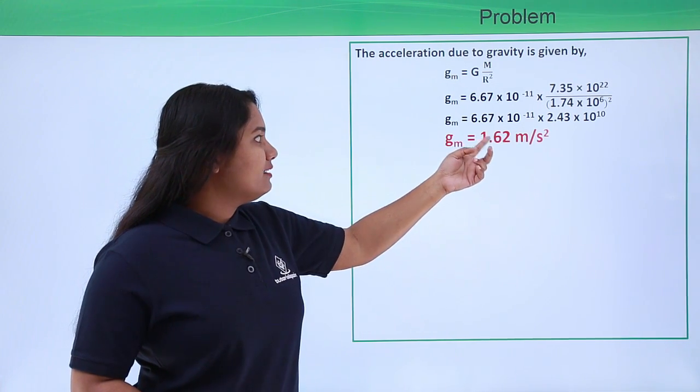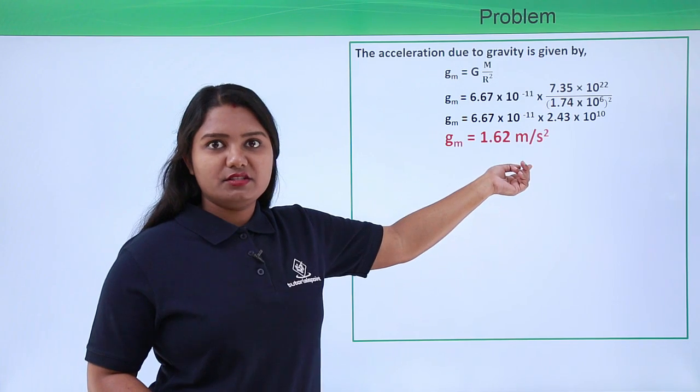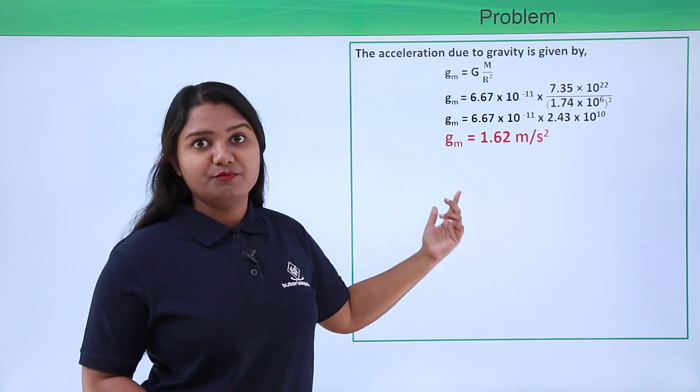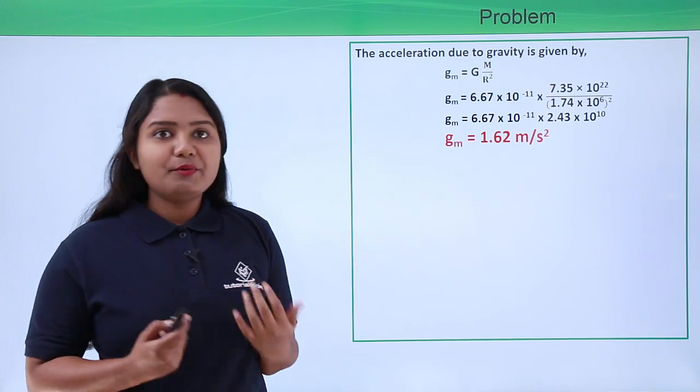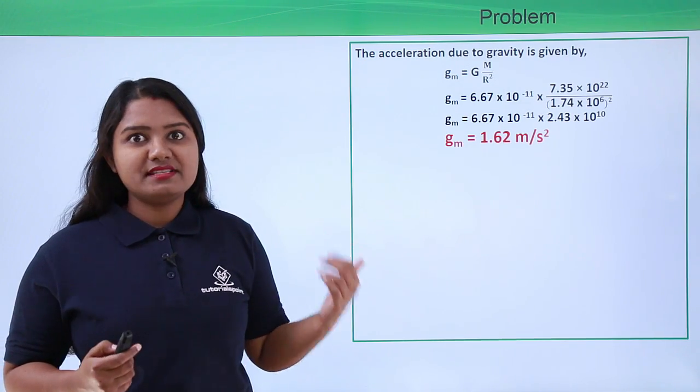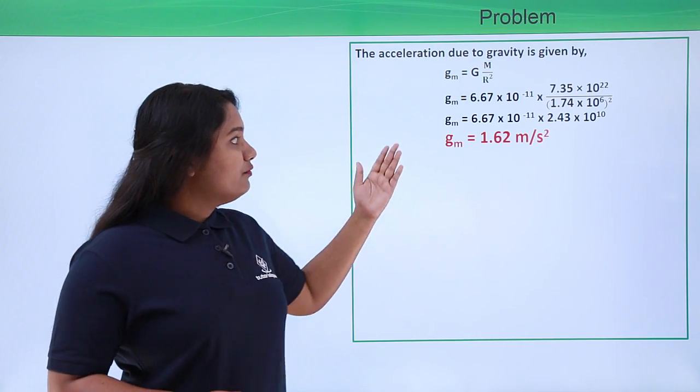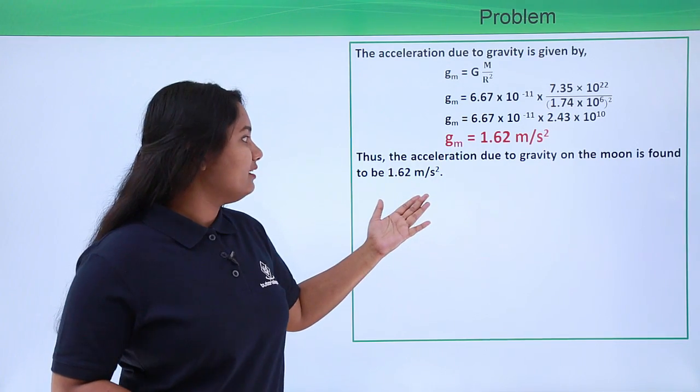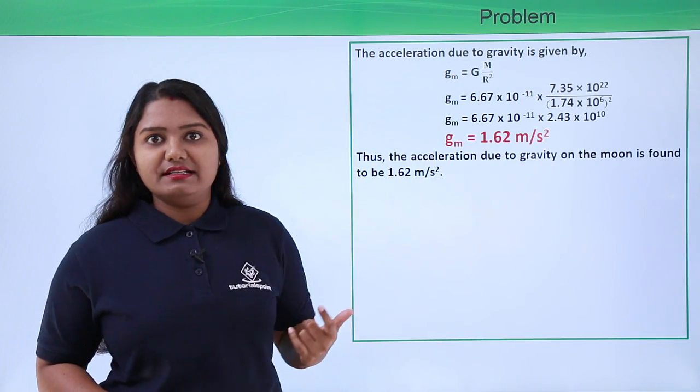gₘ equals 1.62 meter per second squared. So the acceleration due to gravity on the surface of moon is 1.62 meter per second squared. Now we also have to compare it with the acceleration due to gravity on the surface of earth.